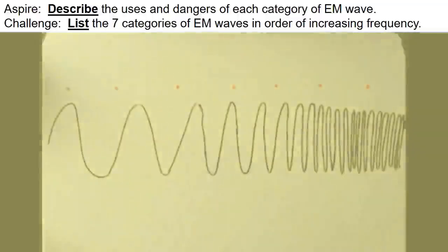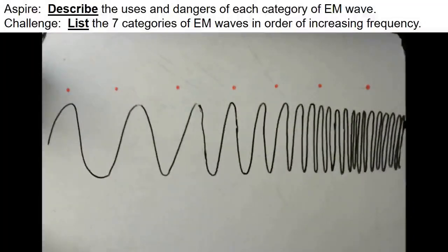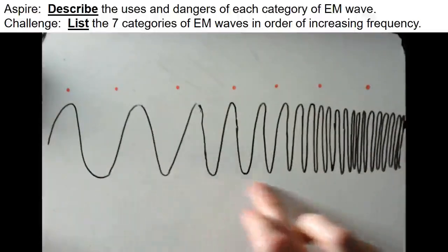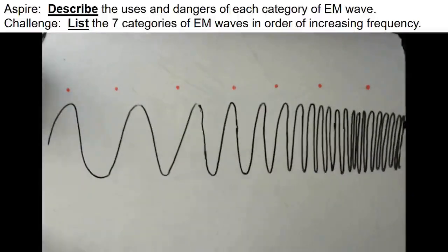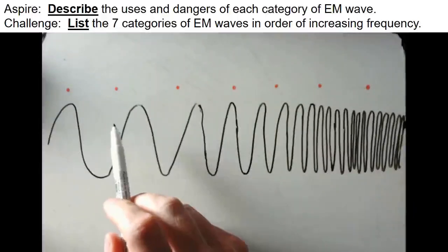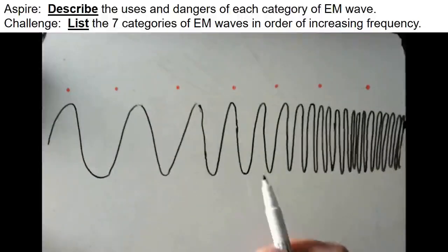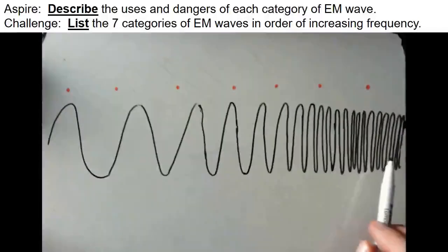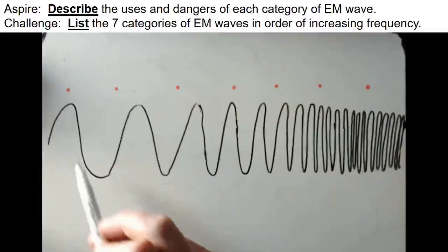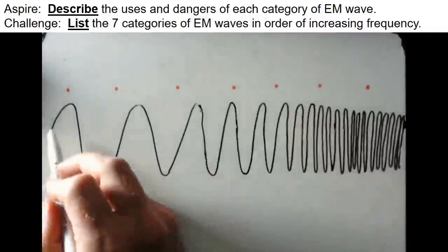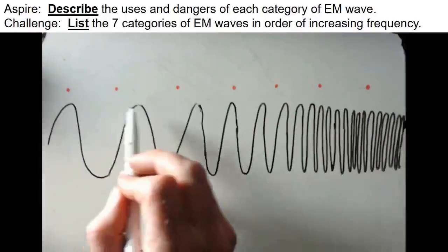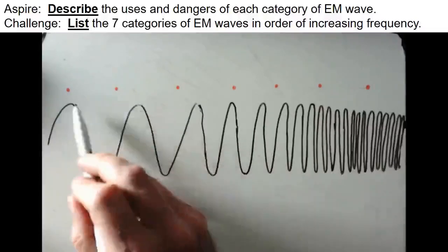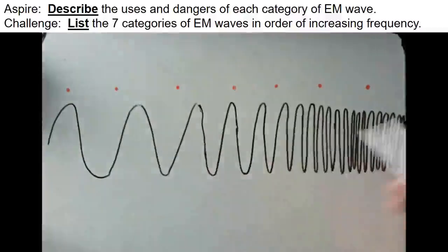When we say that the EM waves can be put into categories, what we actually mean is that the EM wave is one continuous spectrum. It's a family of seven different waves, and they're different because they've got different wavelengths. Those different wavelengths mean they have different properties — they behave differently. But they are one continuous spectrum.